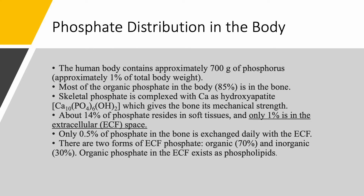What about phosphate distribution in the body? Approximately 1% of total body weight is phosphate. So if you have a 70-kilogram person, then we have 700 grams of phosphate. Most of the organic phosphate in the body is in the bone — 85% — the same as with calcium. The majority of calcium and phosphate in the body are located in the bones. Skeletal phosphate is complexed with calcium as hydroxyapatite, which gives the bone its mechanical strength.